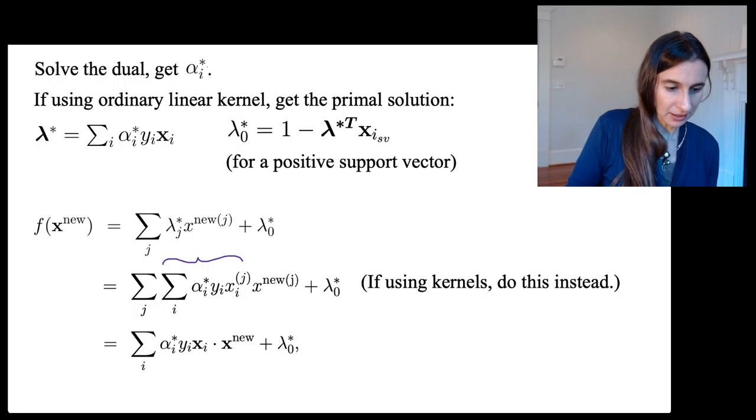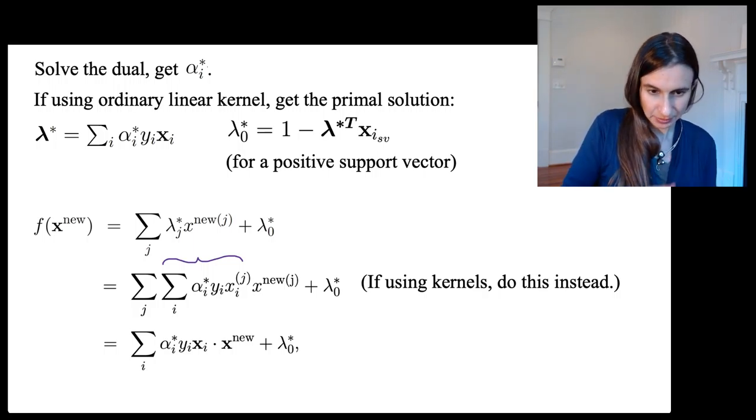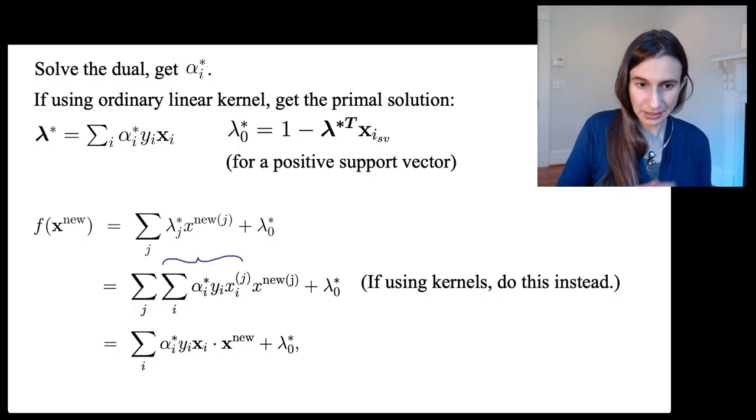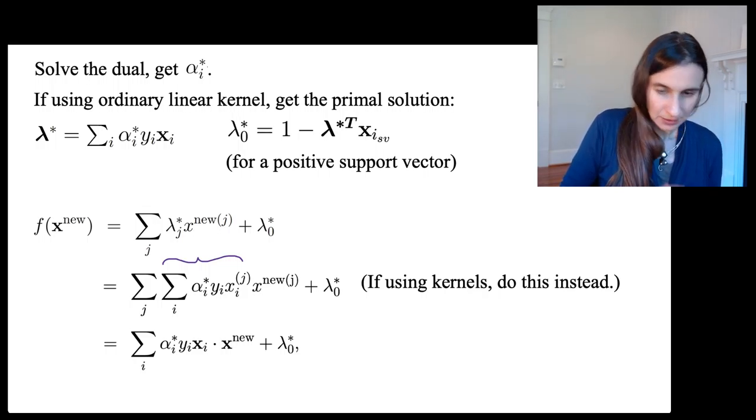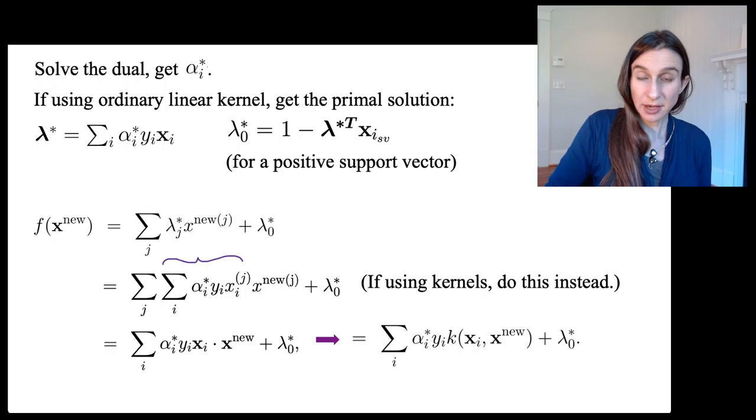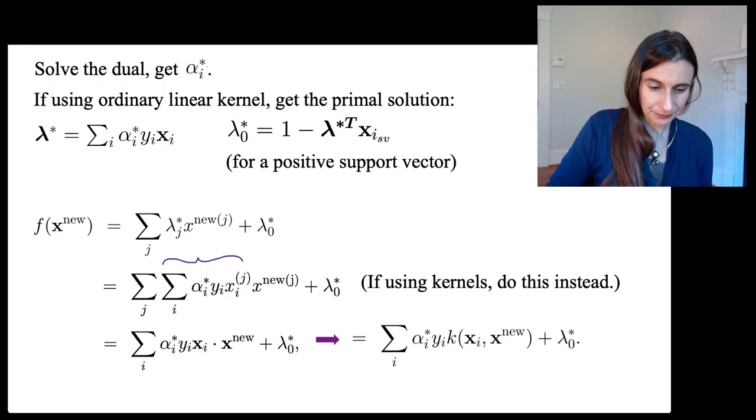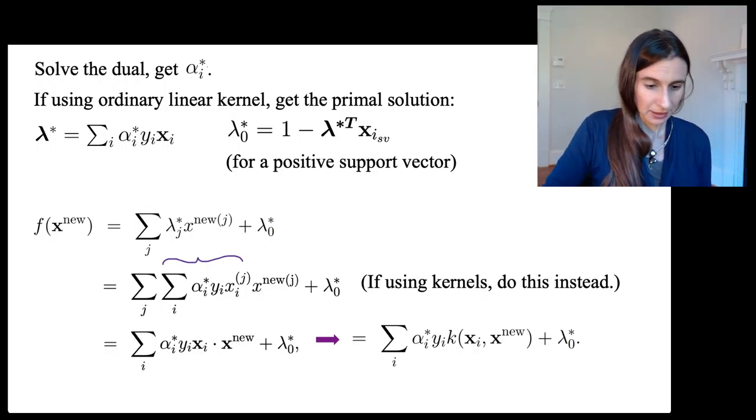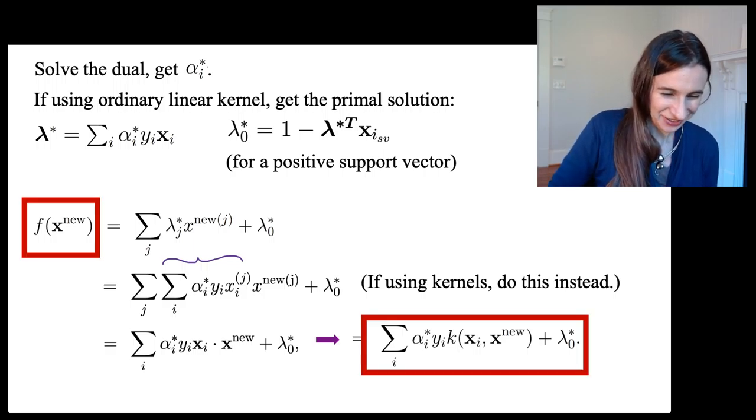If we're using kernels, we're going to do this instead. There's my dot product between x_i and my x_new. If I'm using kernels, I'm going to replace the dot product with the kernel.